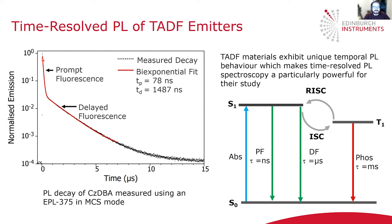You have an initial fast component with a short lifetime, which is the prompt fluorescence, and a longer lifetime component which is the delayed fluorescence undergoing reverse intersystem crossing. This decay was measured using an EPL 375 laser in MCS mode in order to rapidly acquire the decay.